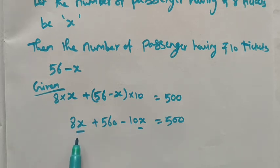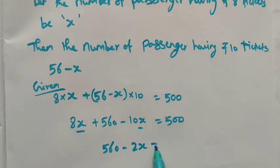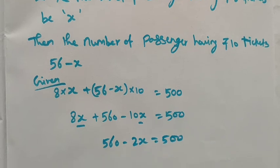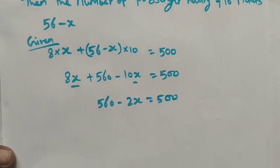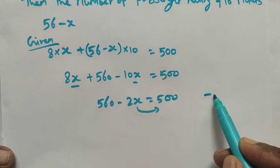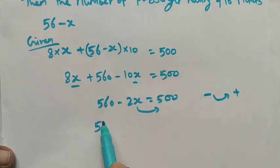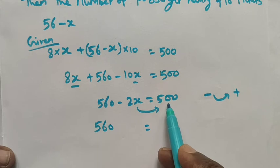We subtract the same variable. 10x minus 8x gives minus 2x. So the equation becomes 560 minus 2x is equal to 500.